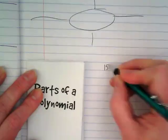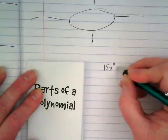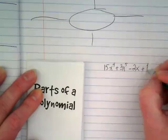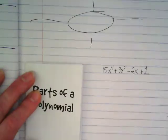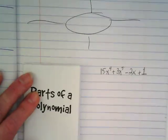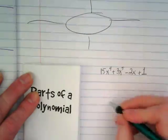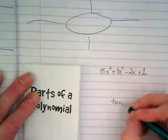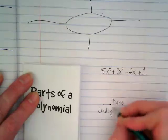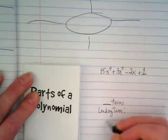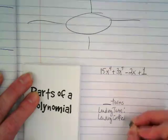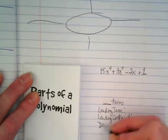But we are going to put a polynomial here. I'd like you to put the example 15x to the fourth plus 3x to the fifth minus 2x plus 1. We're going to be looking for the number of terms. We're going to identify what is the leading term. What is the leading coefficient? What is the degree of this polynomial?